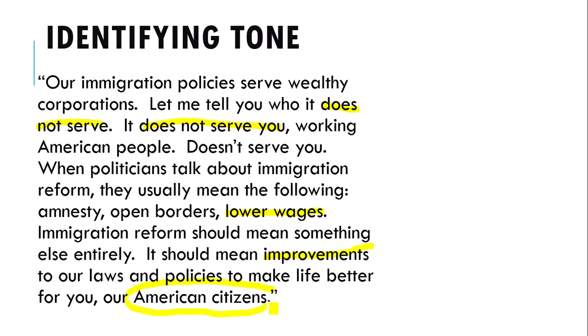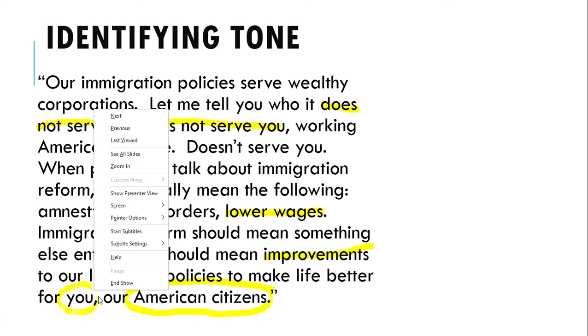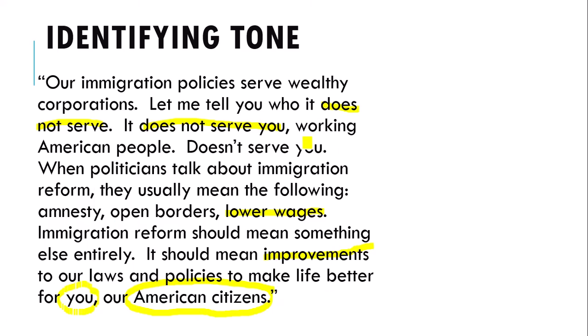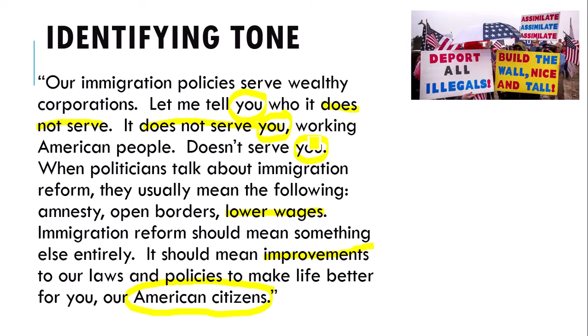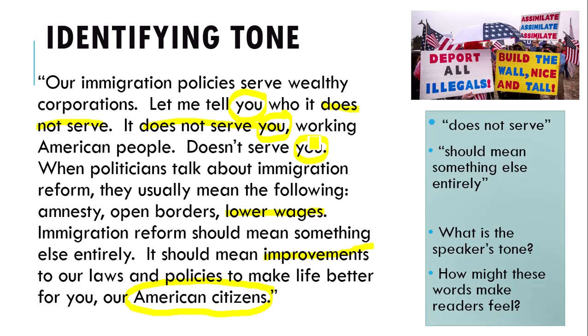We have a pretty specific audience here if you look at these words — 'you' and 'American citizens.' This politician talks directly to the audience, using 'you' many times to show they are writing to that specific group: American citizens, probably those who agree with their points. They went on to discuss how to deport people who were here illegally and how to build a wall. We have a really negative, angry tone here. 'Does not serve' is repeated three times: does not serve, does not serve, doesn't serve.